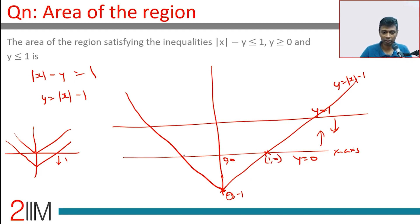When will y be 1? So 1 = |x| - 1, |x| should be 2. (2, 0) or (-2, 0). This distance is 4, this distance is 2.